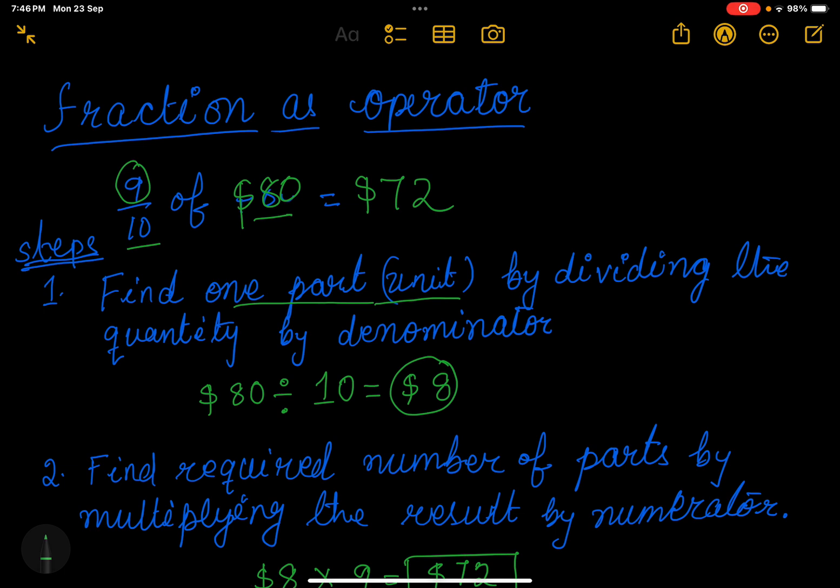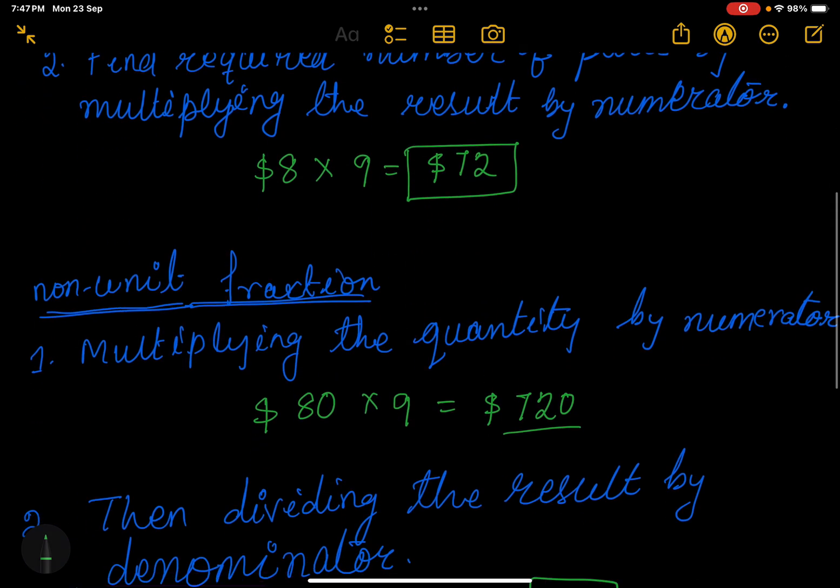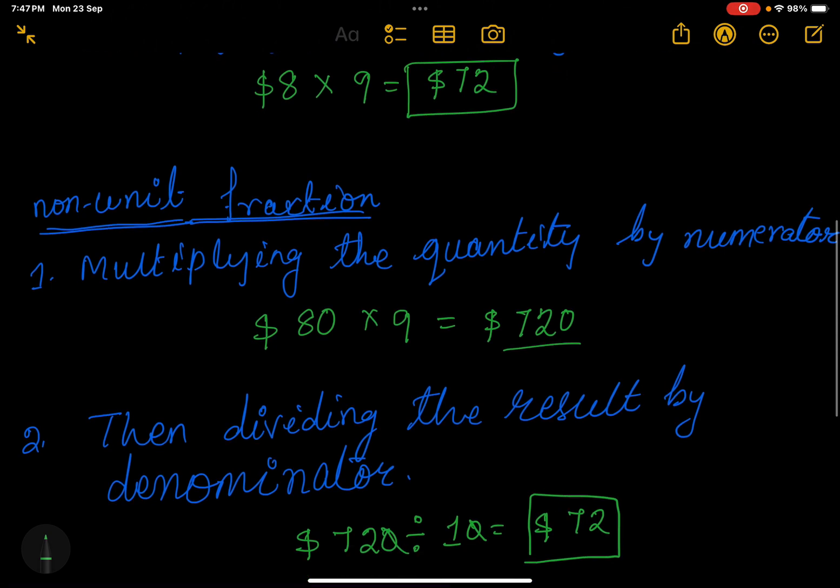So the first way, what we are doing: we are dividing the quantity by the denominator first, then multiplying by the numerator. In the second method, we are multiplying the quantity by the numerator, then dividing the result by the denominator. I hope you understood. Thank you.